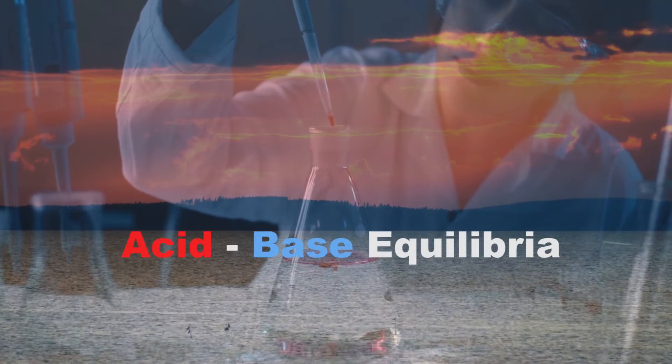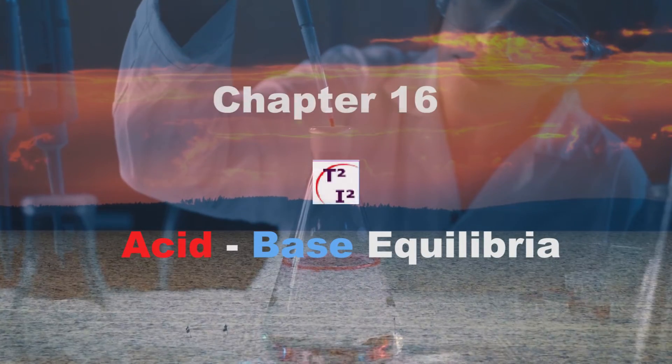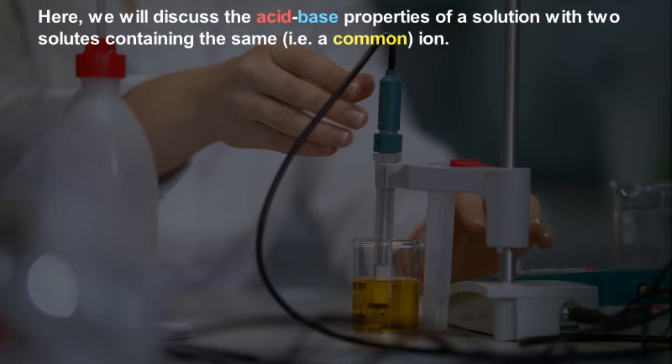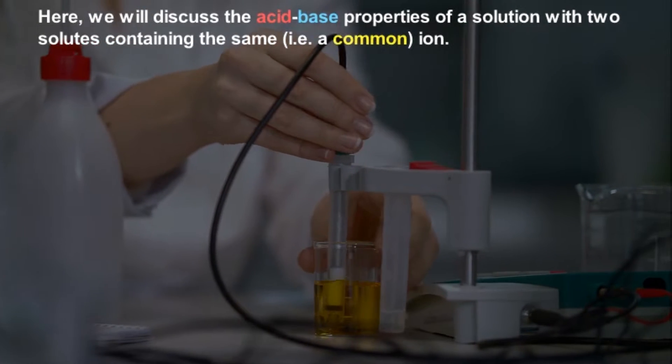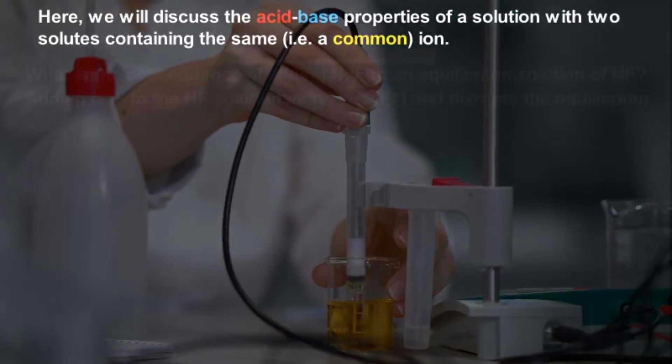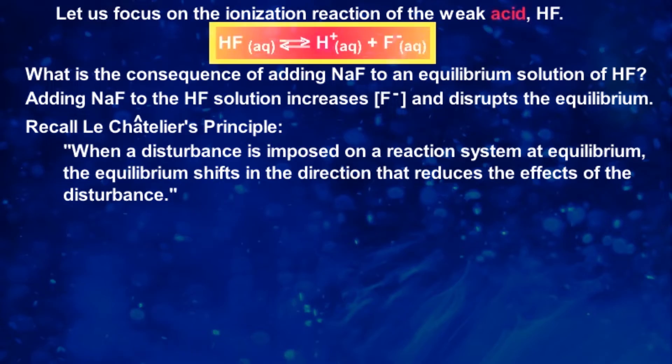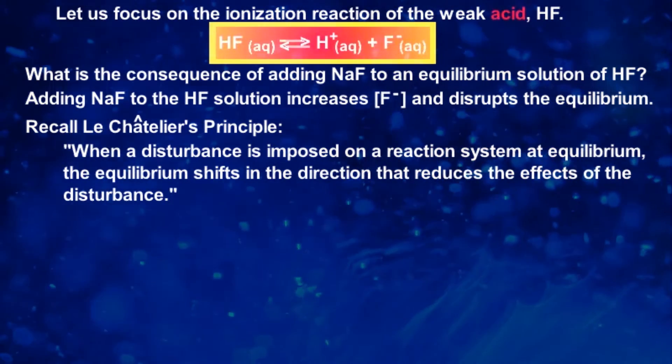Acid-Base Equilibria, Chapter 16. The chapter begins with the explanation of the common ion effect on the pH of an acidic or basic solution. You will be reintroduced to Le Chatelier's principle to enhance your understanding of the common ion effect.